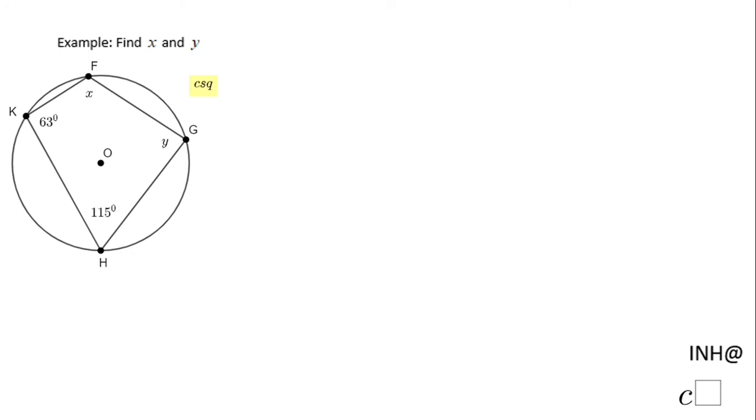Welcome back to C square. In this example, we have an inscribed quadrilateral. We have a circle right here, and this quadrilateral FGHK is inscribed. All the vertices of this quadrilateral are on the circumference of the circle.